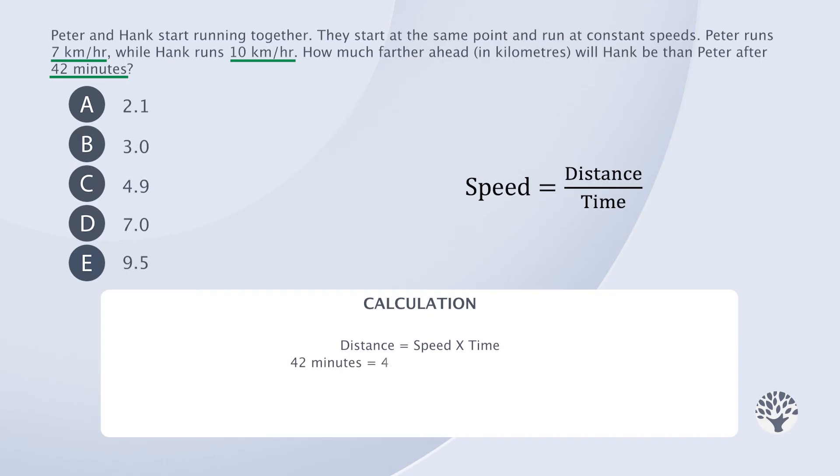There's a shortcut to complete this problem where we multiply that number by the difference in speeds instead of multiplying it by each speed and then finding the difference. So let's do that. The result will be 10 kilometers per hour minus 7 kilometers per hour, multiplied by 0.7, which gives us 2.1 kilometers. The answer is therefore A.